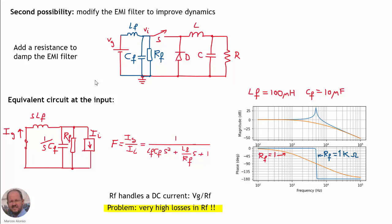A better possibility is to modify the EMI filter to improve the converter dynamics. We can do this by adding a resistance RF in parallel with capacitor CF, damping the EMI filter for a better response. If we consider this damped EMI filter and calculate the filter response — the ratio of input harmonics to injected harmonics — we include the effect of resistance RF. In the previous version, RF was infinite, so that factor was zero.